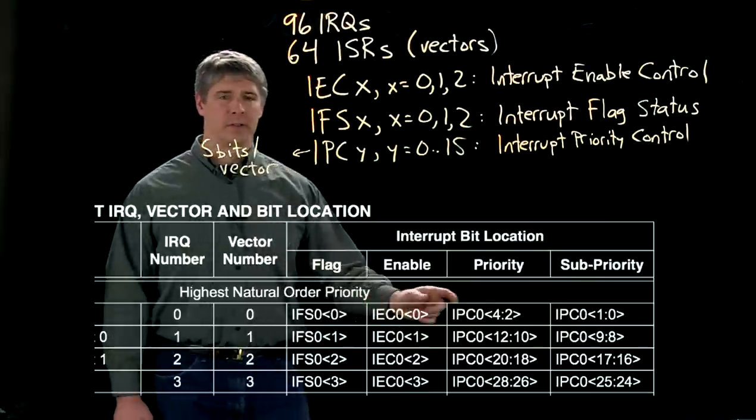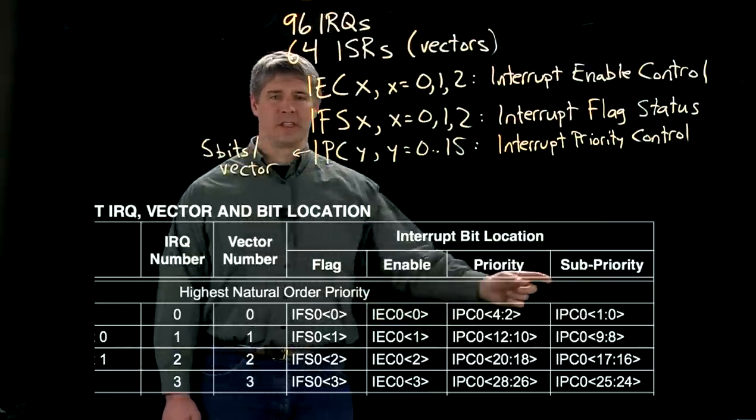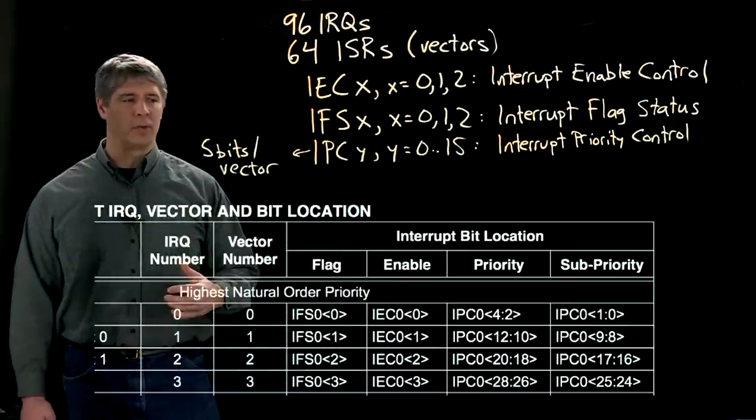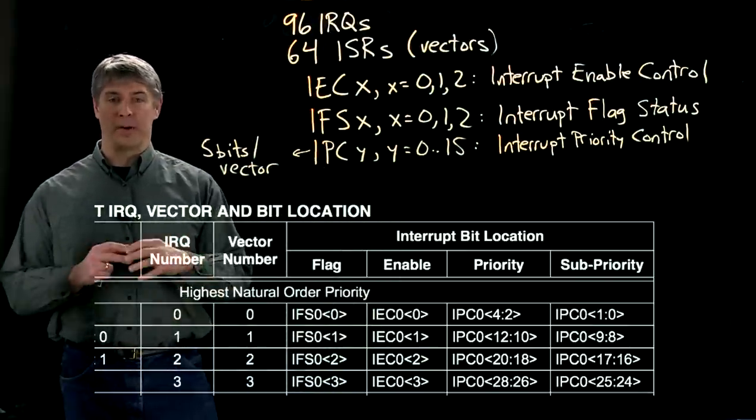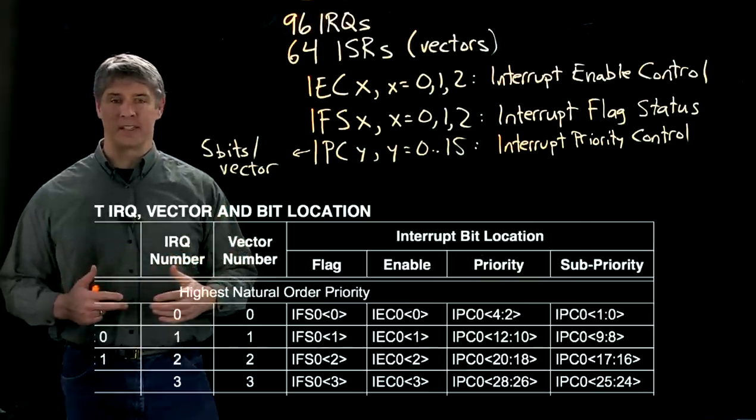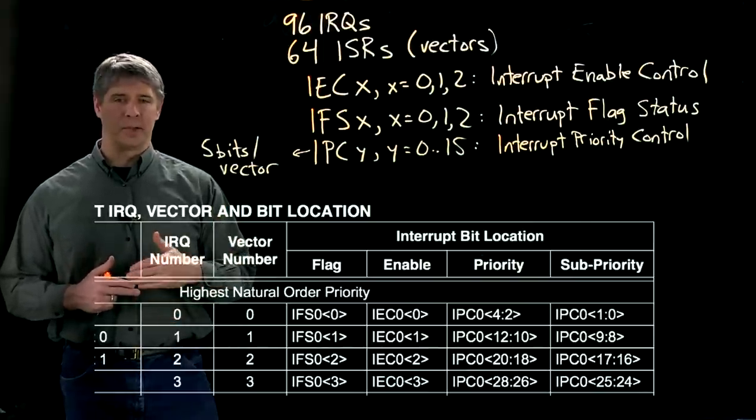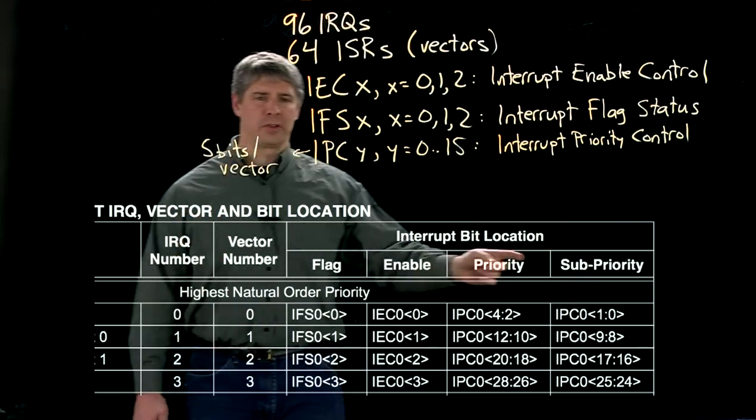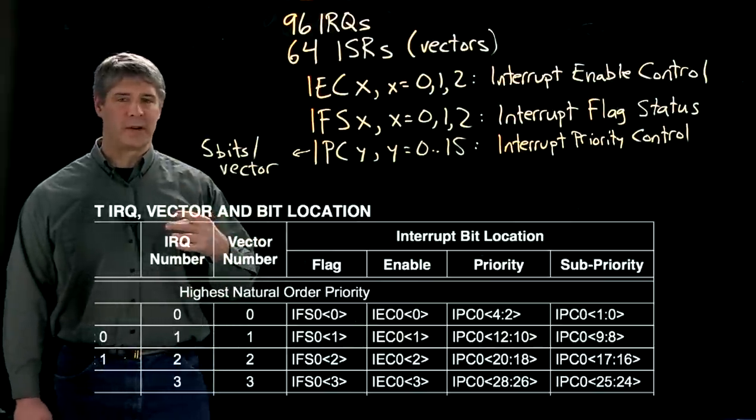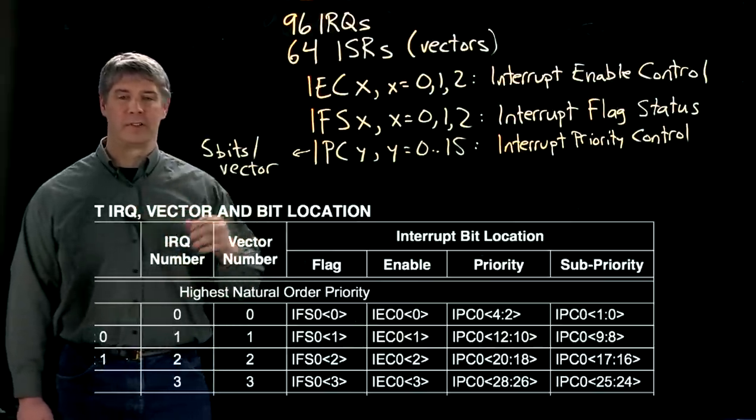And then it's got three priority bits and two sub-priority bits. The three priority bits encode whether the priority is zero up to seven. If it's zero, that interrupt is actually disabled. So really it's only priorities one to seven. And then there's also two bits for the sub-priority to encode value zero to three.